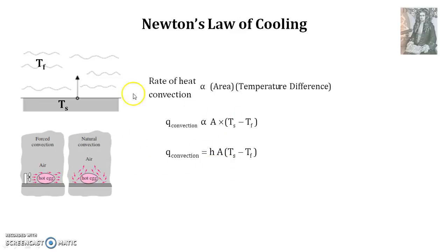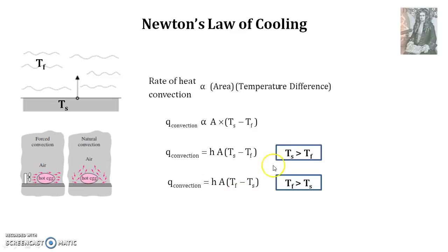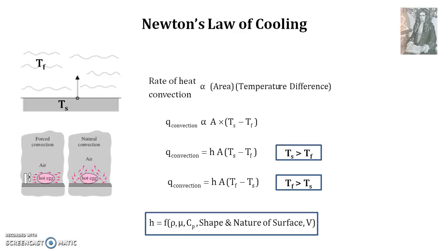Newton's law of cooling states that the rate of heat convection is proportional to the area of the solid surface and the temperature difference between the solid surface and the fluid. In numerical form: Q convection = h × A × (Ts − Tf), where h is the convection heat transfer coefficient. If the fluid temperature is greater than the surface temperature, the equation becomes h × A × (Tf − Ts), keeping the rate of heat transfer positive in the direction of flow.